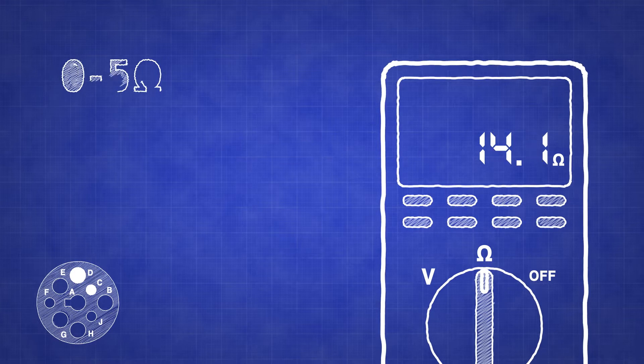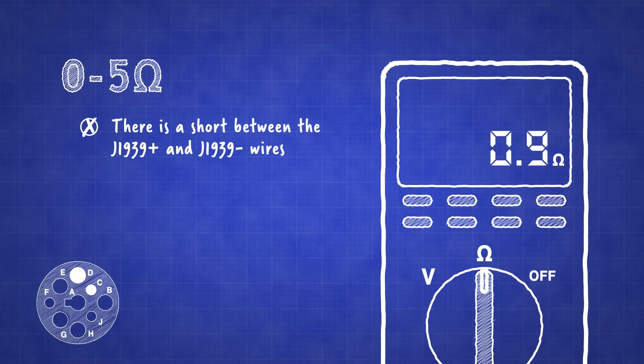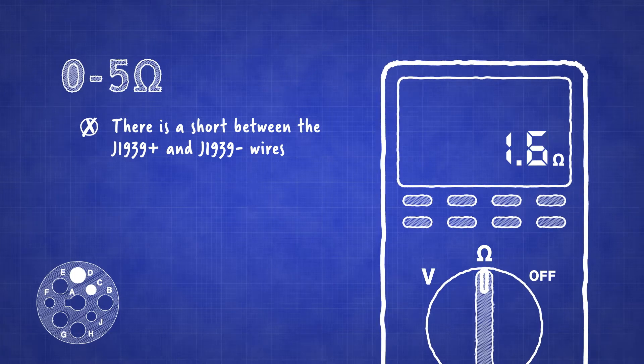If there is a reading of 0 to 5 ohms, then there is a short between the J1939 positive and J1939 negative wires.